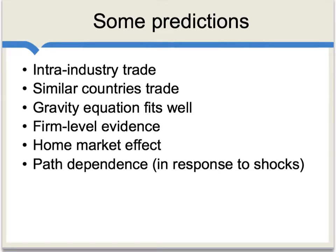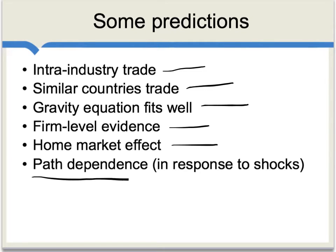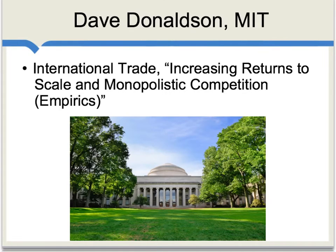We can look at possible predictions of increasing returns to scale theories in six different areas: intra-industry trade, the fact that similar countries tend to trade a lot with each other, that the gravity equation fits the data well, firm-level evidence, whether or not there is a home market effect, and finally the issue of path dependence in response to shocks. For much of the structure of this discussion, I'm relying on an online handout from David Donaldson at MIT.